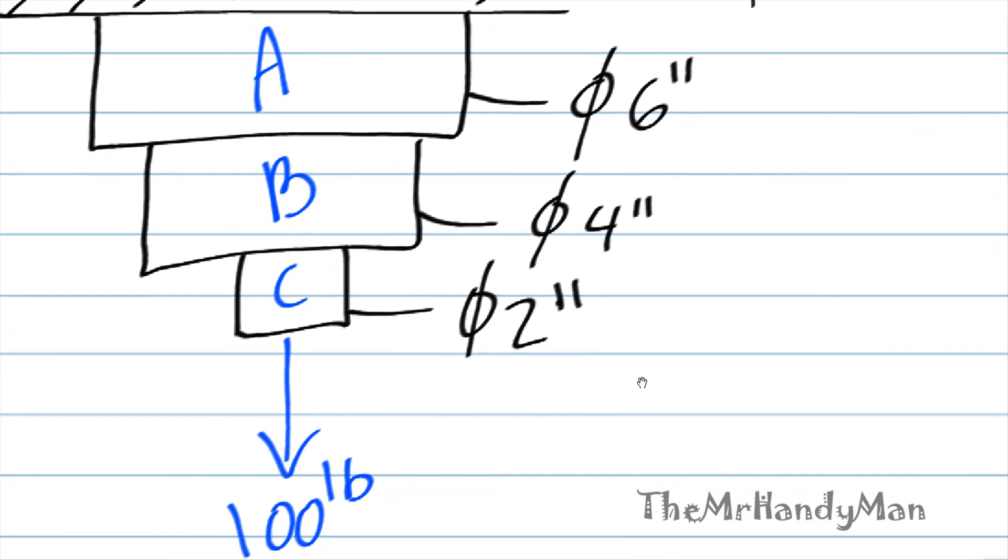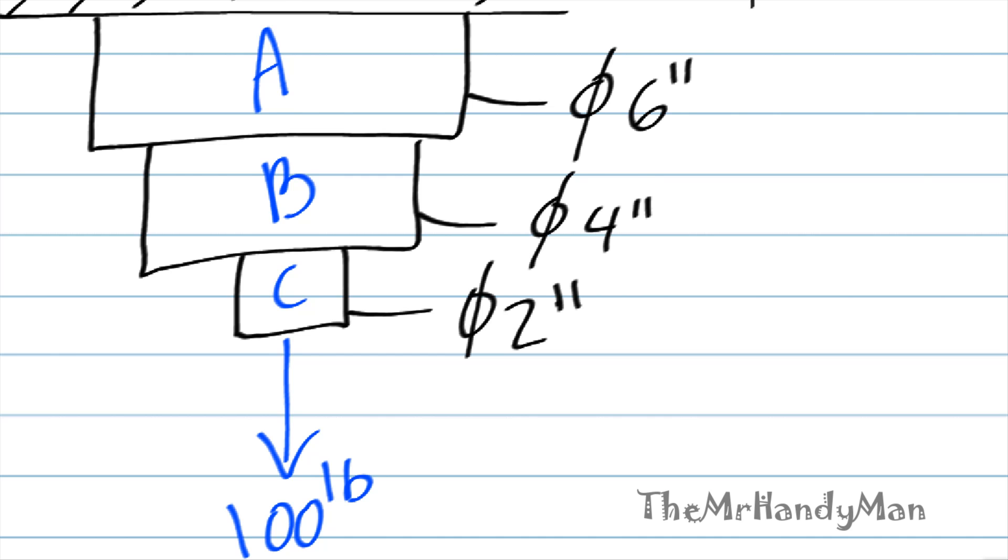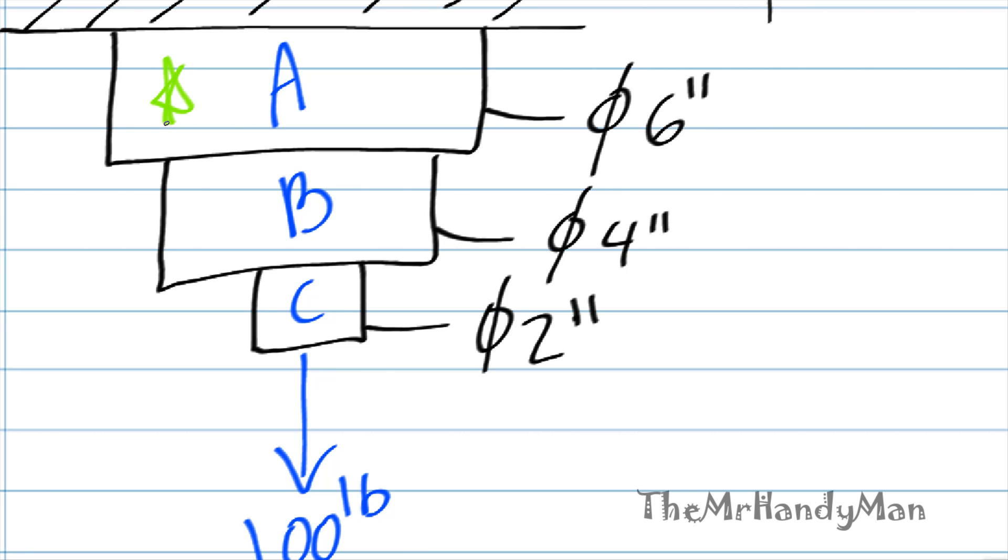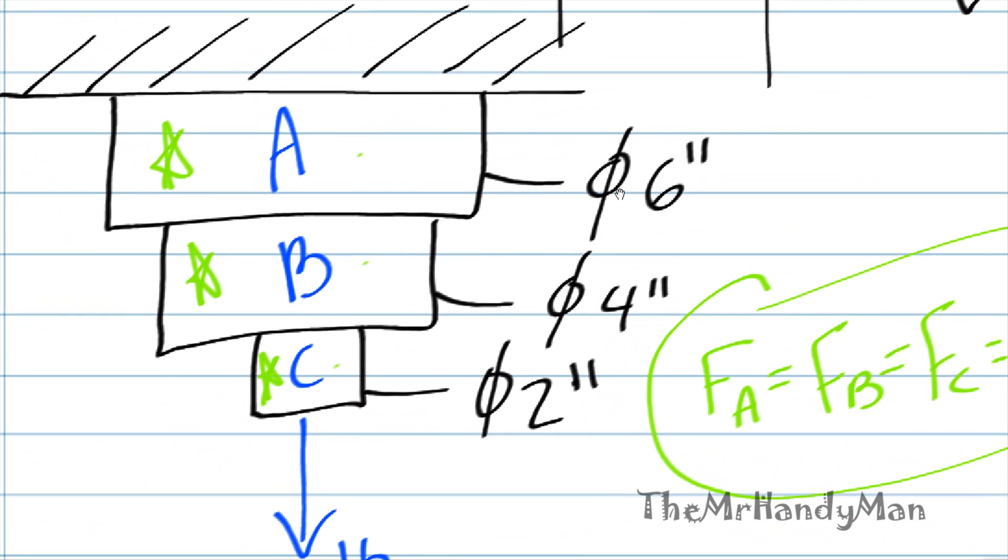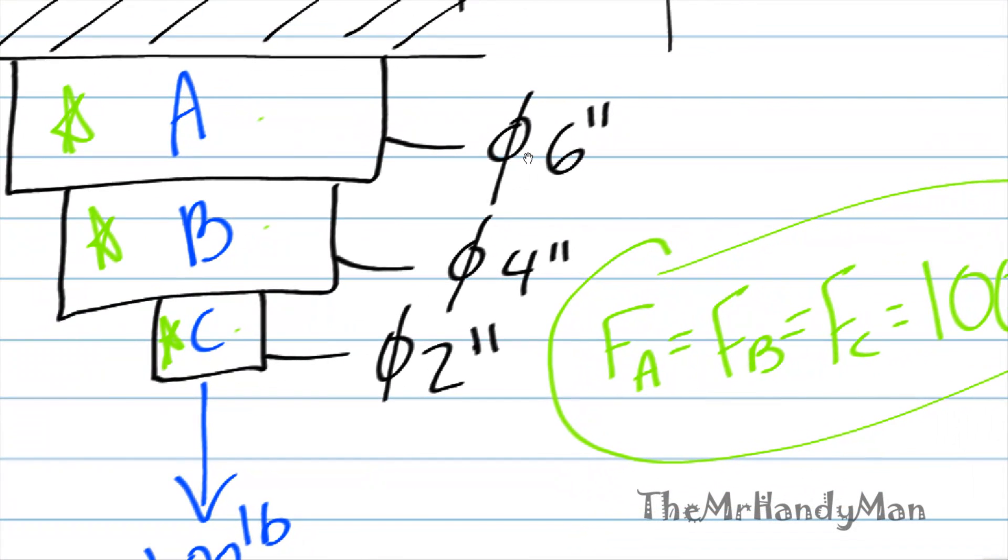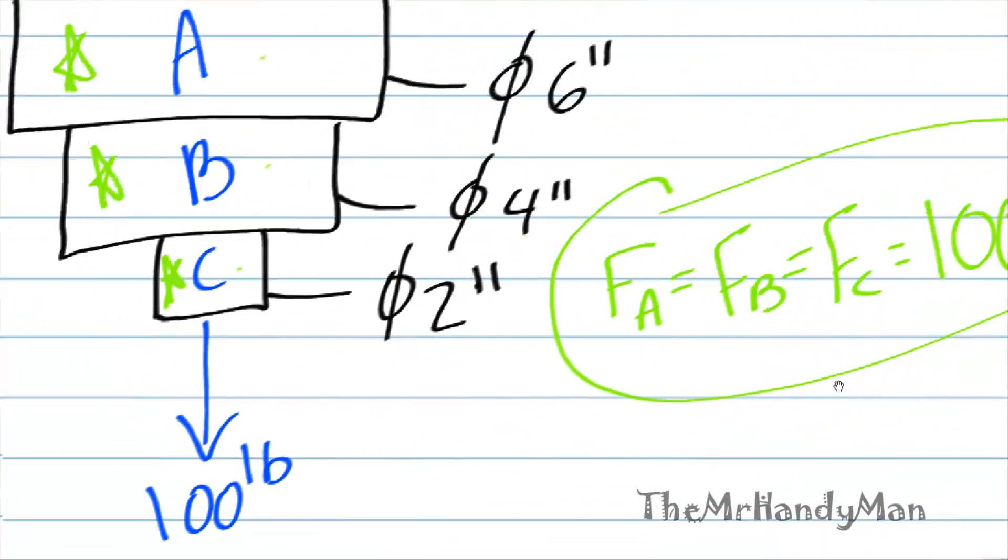Now you can realize that the force is applied to all bodies A, B, and C. It travels literally from one body to the next. So we know that force A equals force B equals force C, which equals 100 pounds. This is a for sure thing that we know. However, seeing that the diameters of each of these cylinders changes from six inches to four to two, you can see that the stress will change within them.